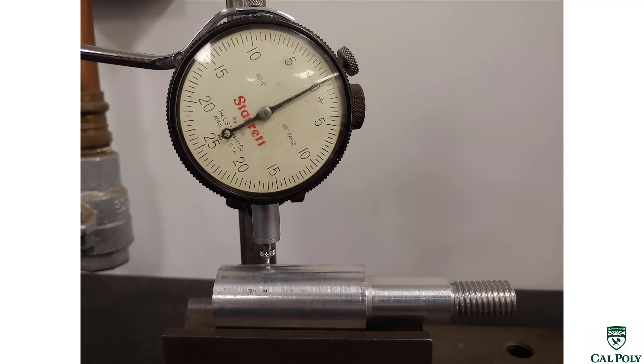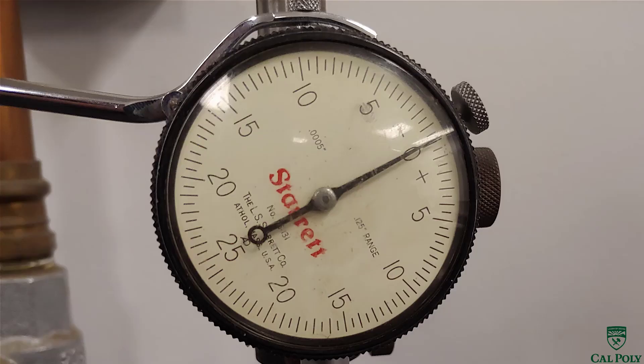The measurement device that we will be using is called a dial indicator, which should not be confused with the test indicator used for the mill part previously. This dial indicator also has a resolution of one half thousandth of an inch. This means that each graduation is 0.0005 inches.